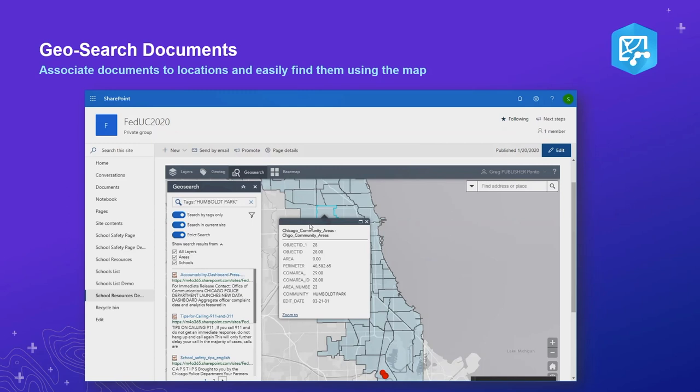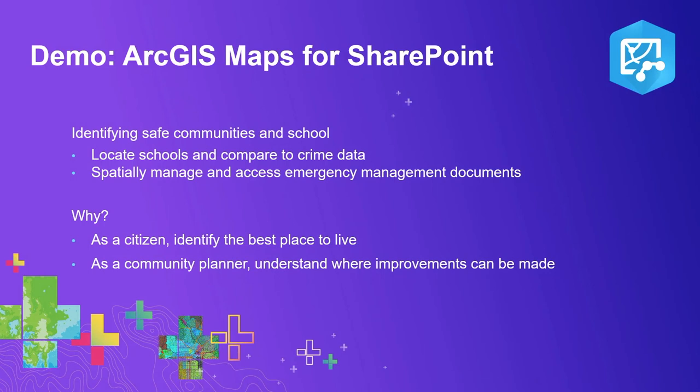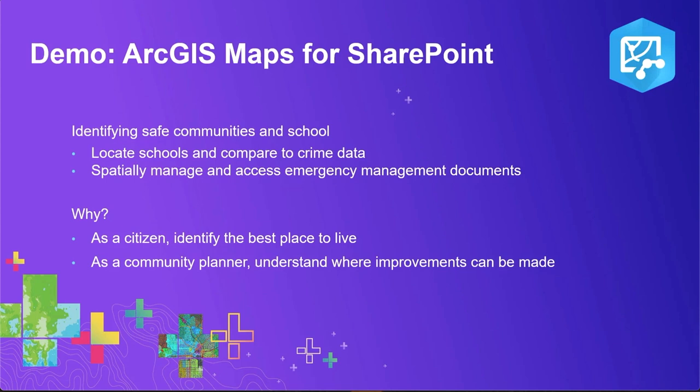You can set up that workflow not only with the geocoding or geo-enablement component but also enrichment — appending those environmental, demographic, and economic variables onto your spatial data, set up to be automated. Viewers of your SharePoint site will be able to interact completely with that map knowing it's coming from your SharePoint data. Geo-searching documents associates your documents with a specific GIS feature — as an end user you might see these assets on a map, click on a given location, and see the documents associated with it. That's a powerful way to organize content spatially. Na is going to walk us through what I just talked about — identifying safe communities and schools in Chicago, comparing crime data, and managing emergency management documents associated with each school.